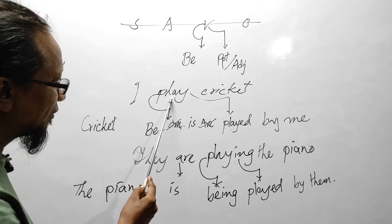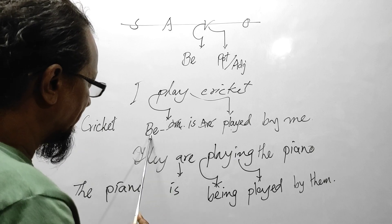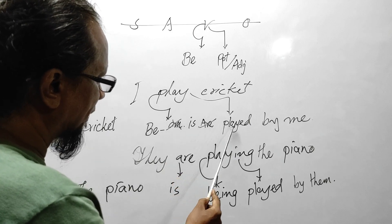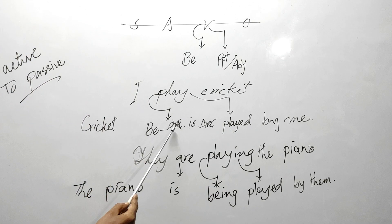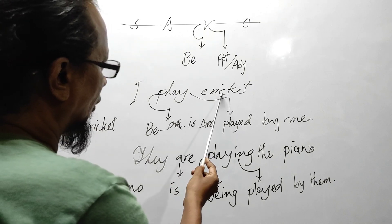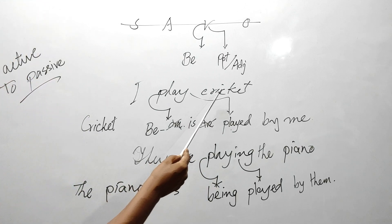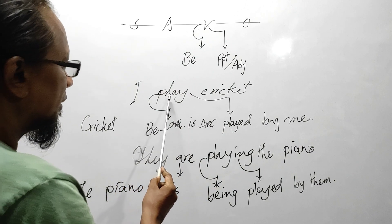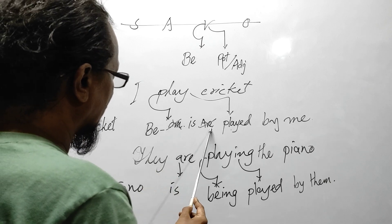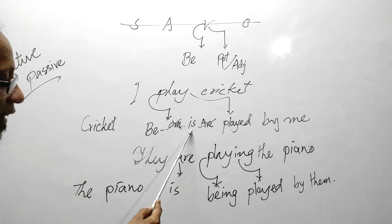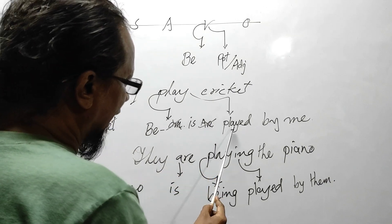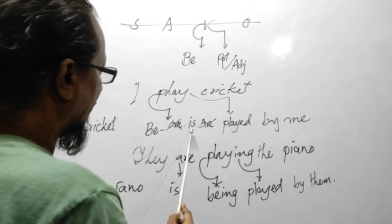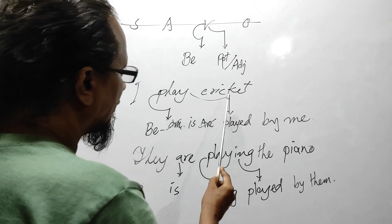For example: 'I play cricket.' The principal verb is 'play' here, and it is going to be replaced by am/is/are. This principal part — 'play' — is turned into past participle, that means adjective. 'Play' is present form, so am/is/are should come here. With 'cricket' as subject, it is 'cricket is,' so the verb becomes 'is played.' Cricket is played by me.